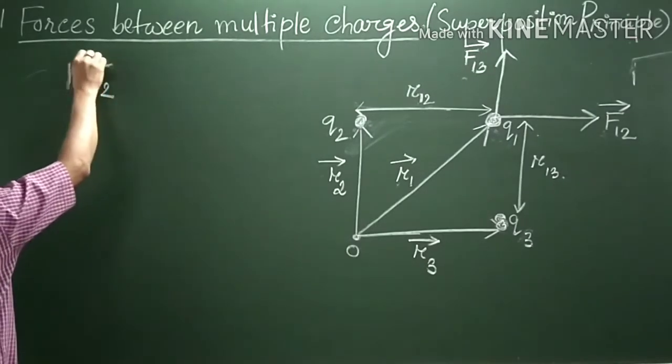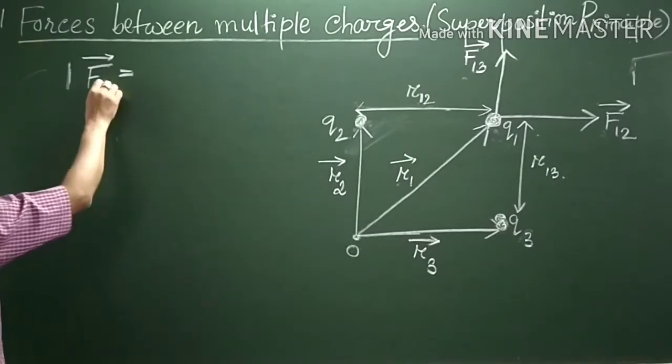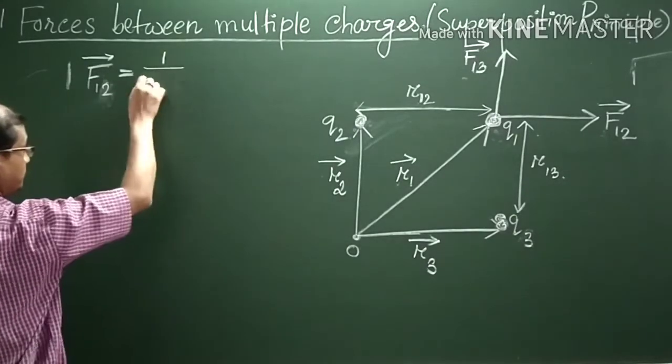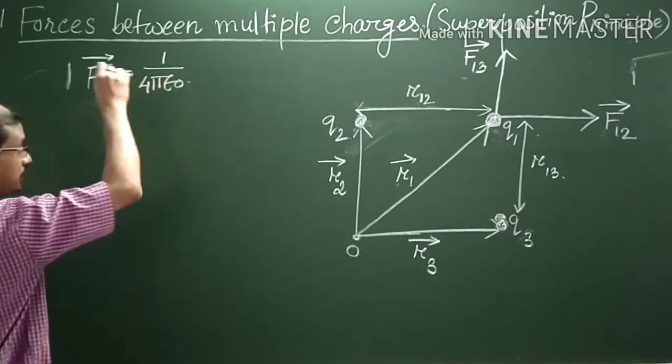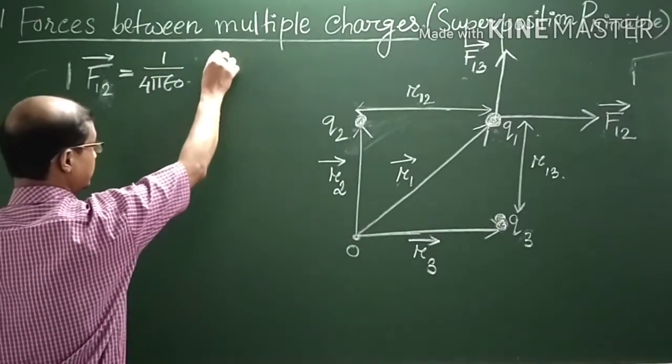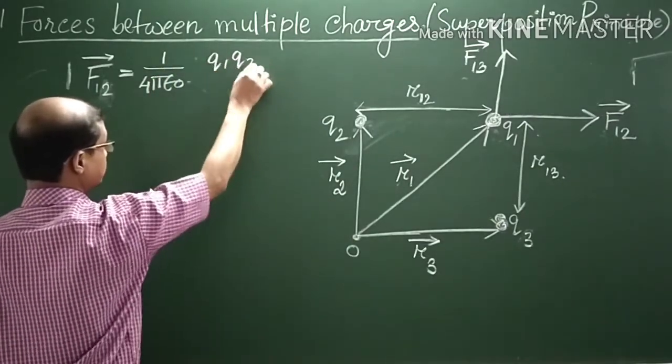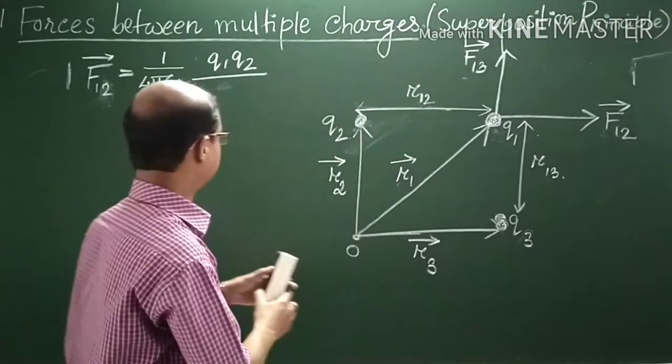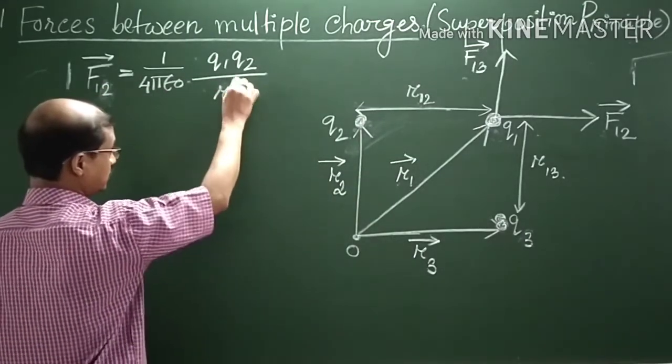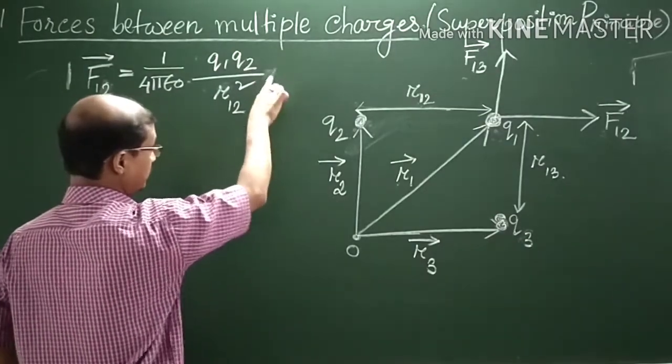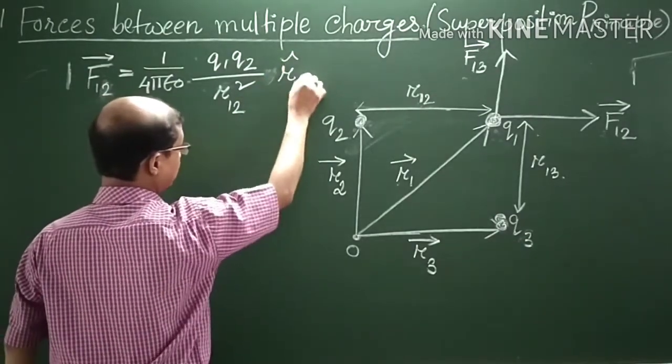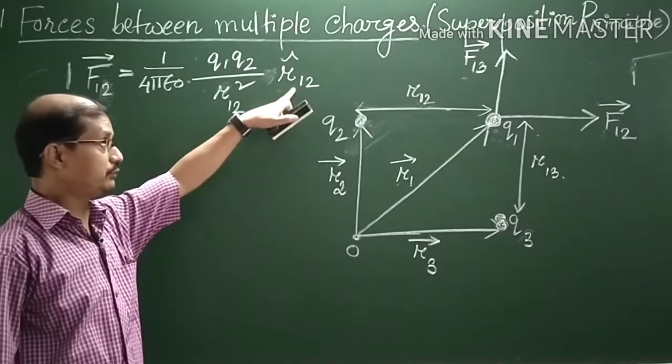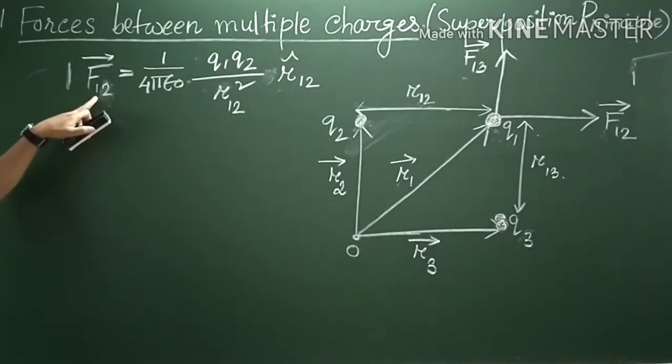F12 is Coulomb force. The formula is 1 upon 4πε₀, Q1Q2 by R square. The separation between Q1 and Q2 is R12, so we write R12 square into unit vector. Unit vector is R cap 12. R cap 12 is the unit vector representing the direction of F12.